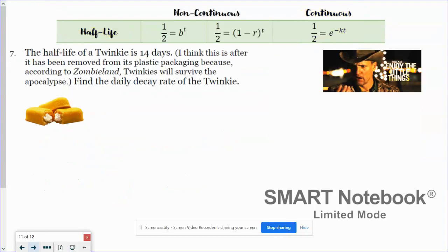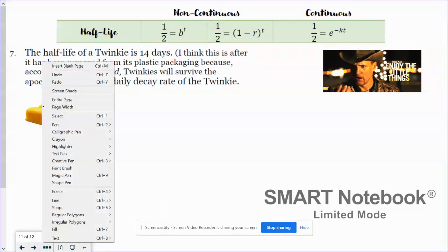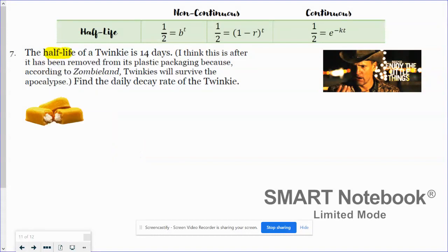One more. So the half-life of a Twinkie is 14 days. I think this is after it's been removed from its plastic packaging because according to Zombieland, Twinkies will survive the apocalypse. You know, that's why I donate Twinkies. Find the daily decay rates.